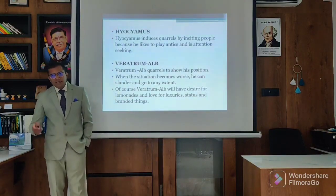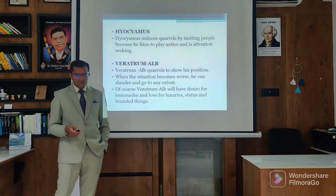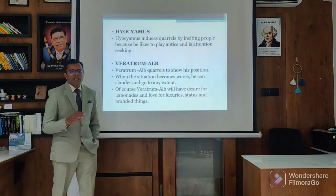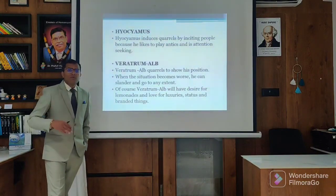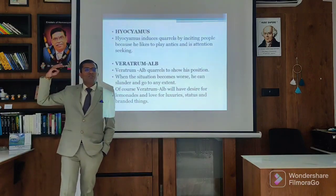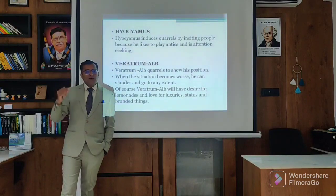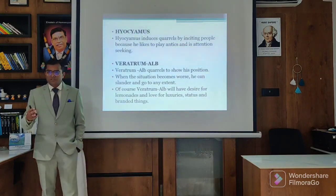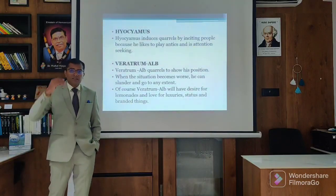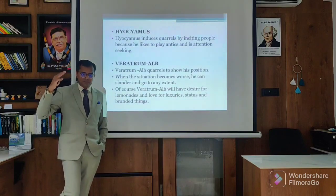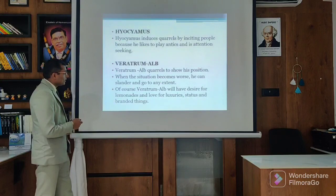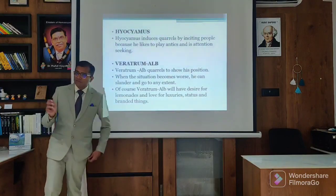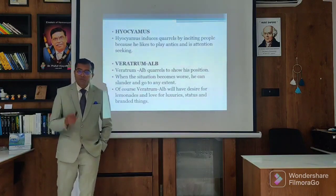There is Hyoscyamus - again a verbal remedy, inciting others, quarrelsome. They always quarrel by inciting others, and they take enjoyment of all. He likes to play antics and is an attention seeker - that is why they quarrel. Veratrum quarrels because he has such a high self-esteem - he feels 'I am the king, I am the princess, I am the biggest one, I have a big ego,' and that ego leads to quarrelling with people. They can dominate others, slander others, criticize anyone. Veratrum goes into impoliteness and rudeness, and they go into quarrelsomeness. Of course, Veratrum will have desire for laminates, love for luxuries, status and branded things - love for luxuries and branded things are the psychotic aspects.